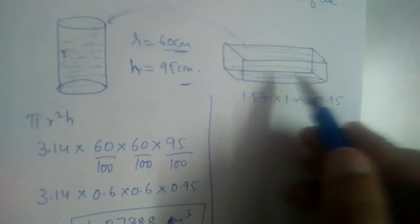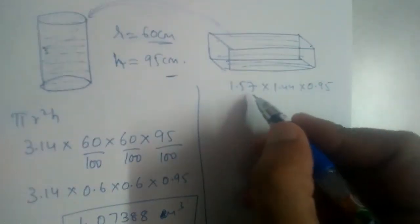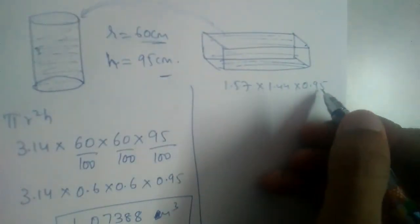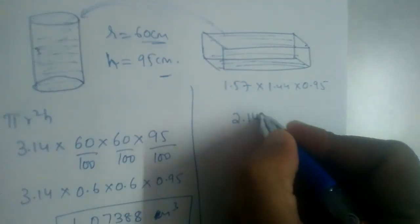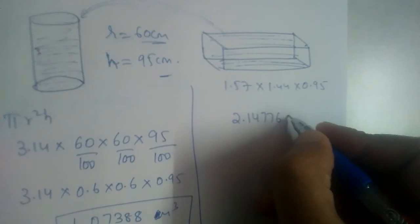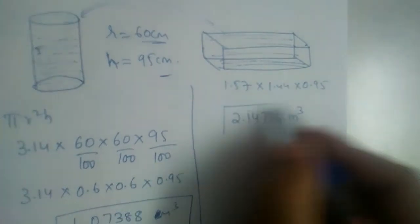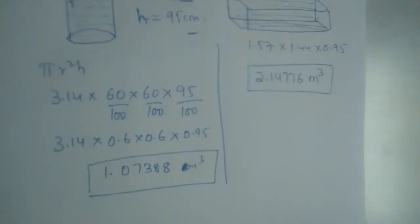Now, let us find the volume of the sump. It is 1.57 into 1.44 into 0.95. If you multiply this, we will have 2.14776 meters cube.